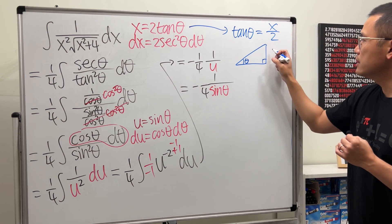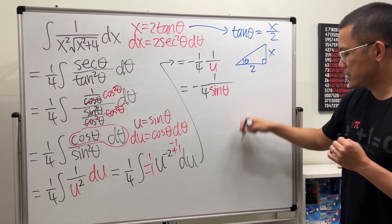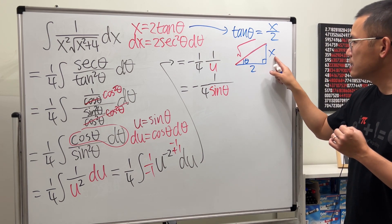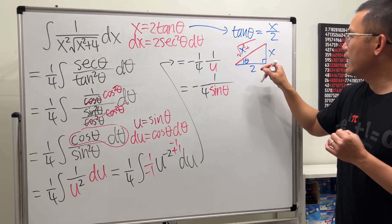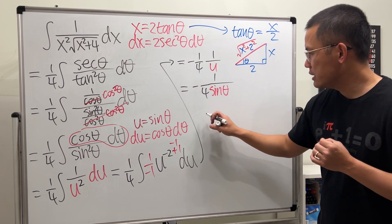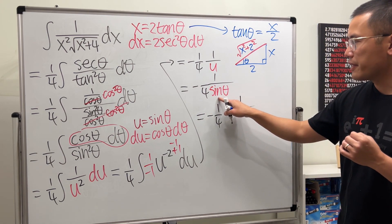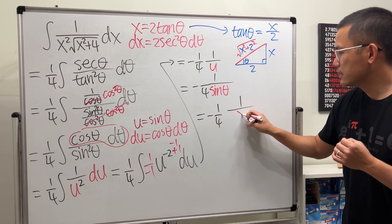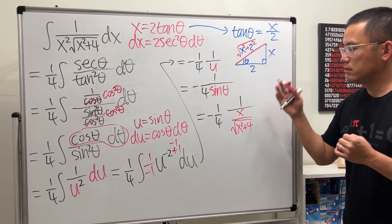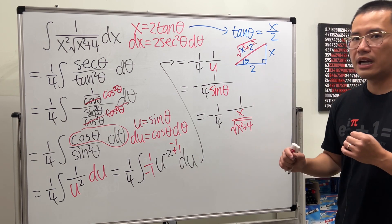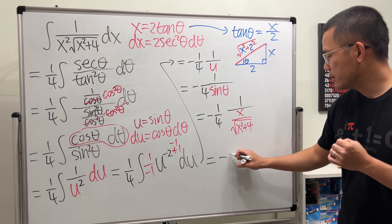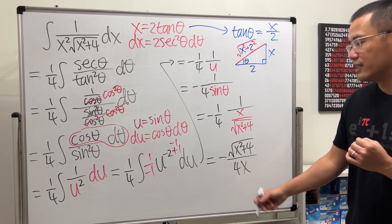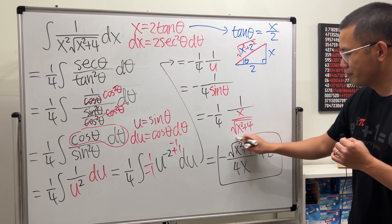With tangent equal to opposite over adjacent, label the opposite side x and adjacent side 2. The hypotenuse is square root of x squared plus 4. So sine theta equals opposite over hypotenuse, which is x over the square root of x squared plus 4. Since we have 1 over sine theta, we flip it. The answer becomes negative 1/4 times square root of x squared plus 4, all over x.